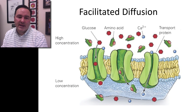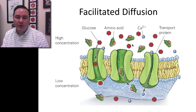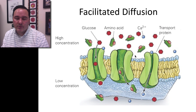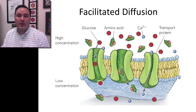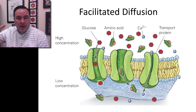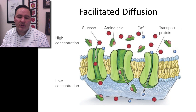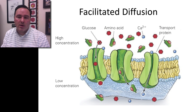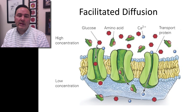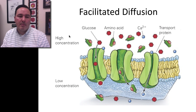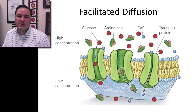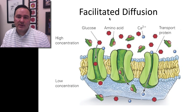You can also have facilitated diffusion, where larger molecules or charged molecules that cannot freely pass through the membrane must pass through a channel, a tube, or a tunnel. There are proteins embedded within the membrane that serve this purpose — they allow these larger or charged molecules to freely flow from one side of the membrane to the other based on the concentration gradient, from areas of high concentration to low concentration. This is called facilitated diffusion.